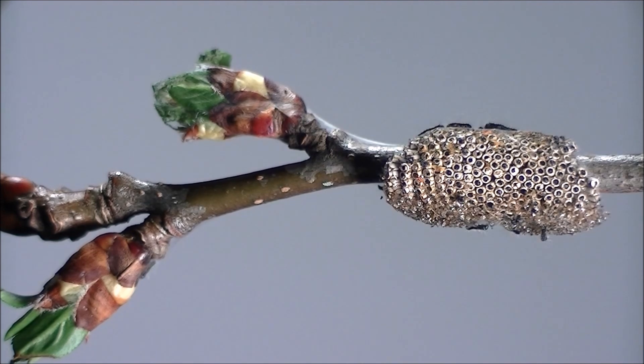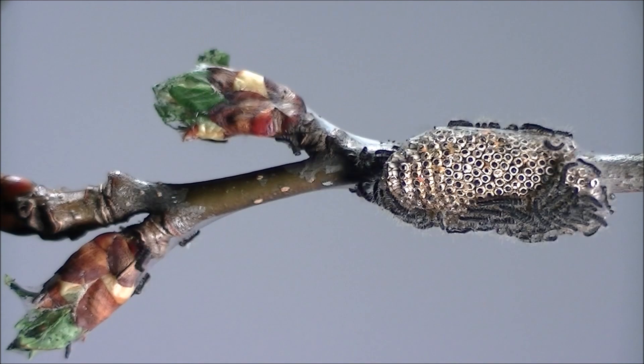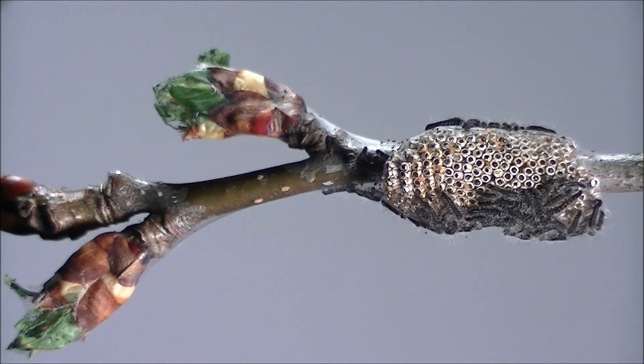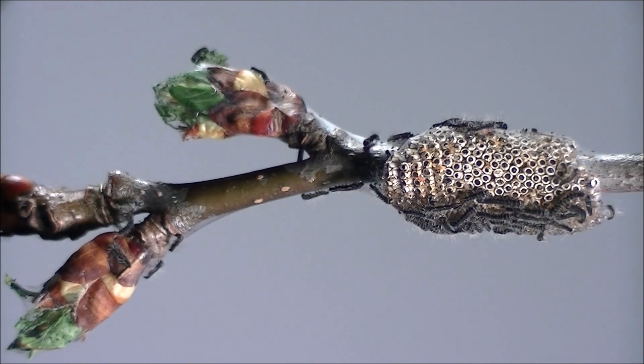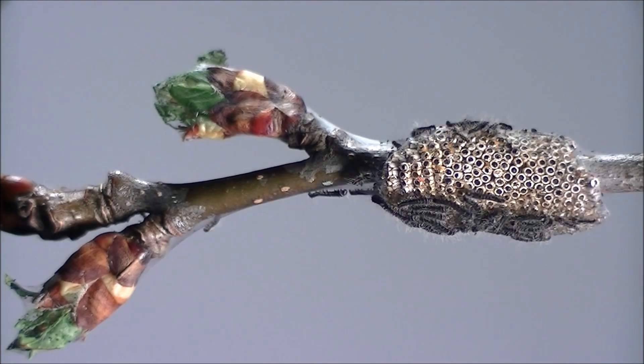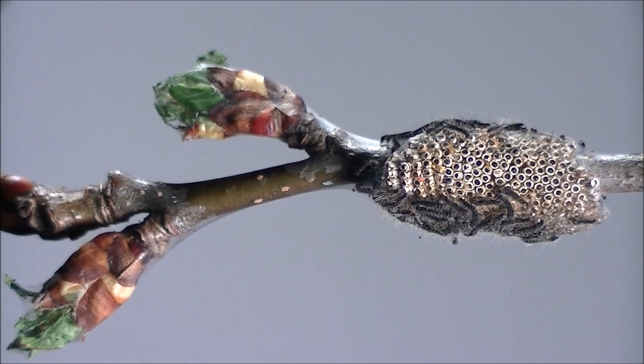This colony is fortunate as there is fruit nearby. The caterpillars return to the egg mass after feeding and bask together. By absorbing the rays of the sun, they warm sufficiently to digest the leaves that fill their stomachs.